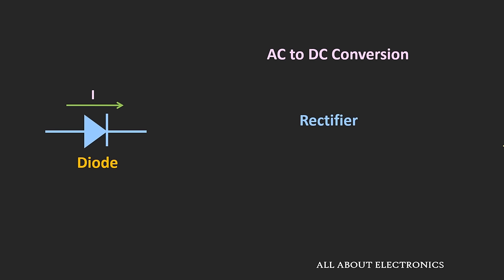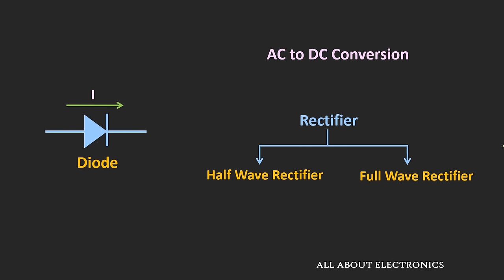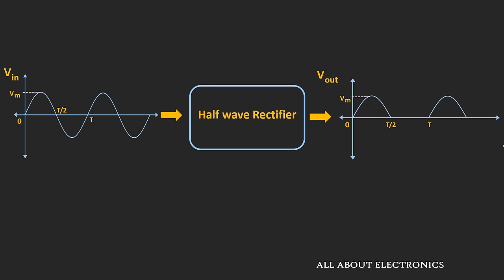Now broadly these rectifiers can be classified into two categories. One is known as the half wave rectifier, and the second one is known as the full wave rectifier. In this video, we will learn about the half wave rectifier. Whenever a sinusoidal signal is applied as an input to this half wave rectifier, this rectifier only allows one half of the sine wave and rejects the other half of the sine wave.